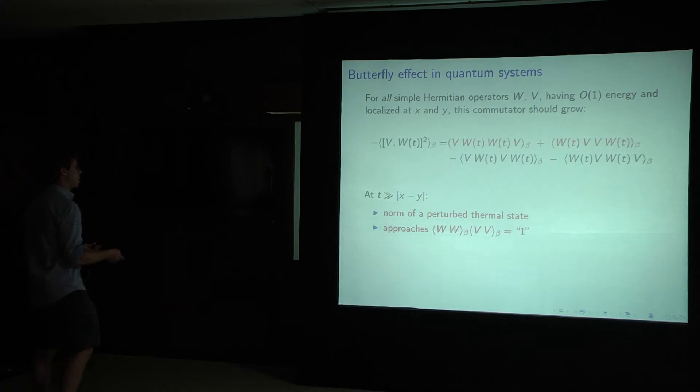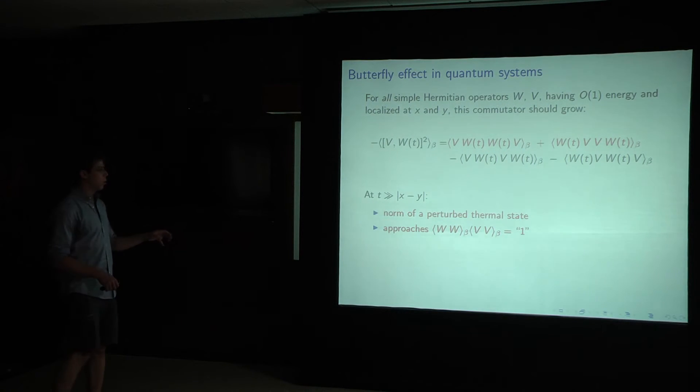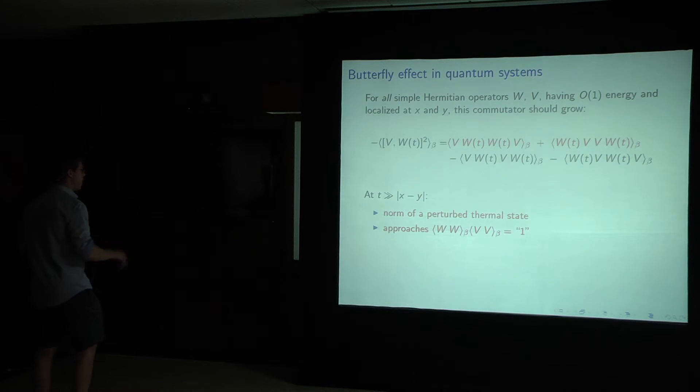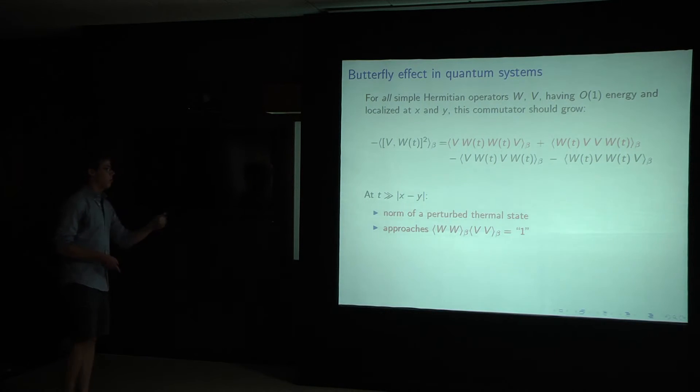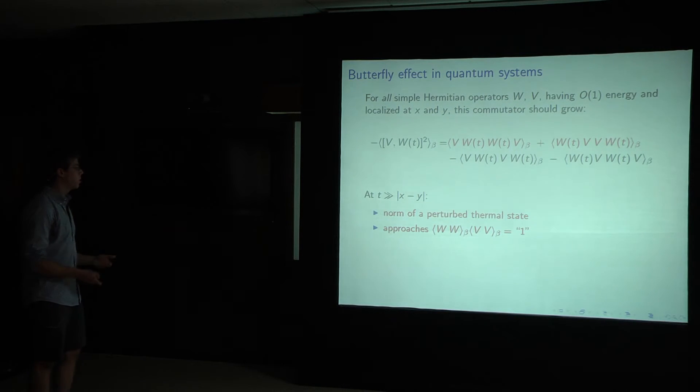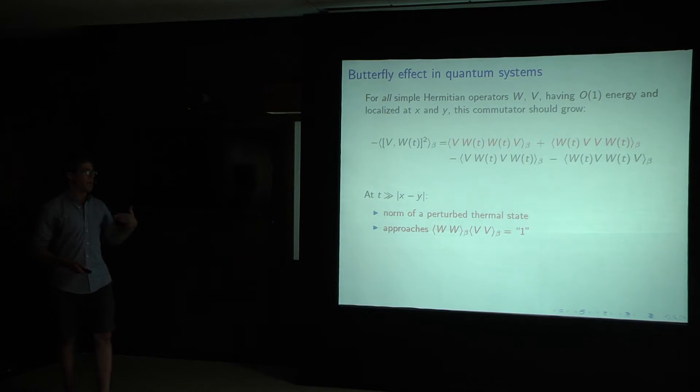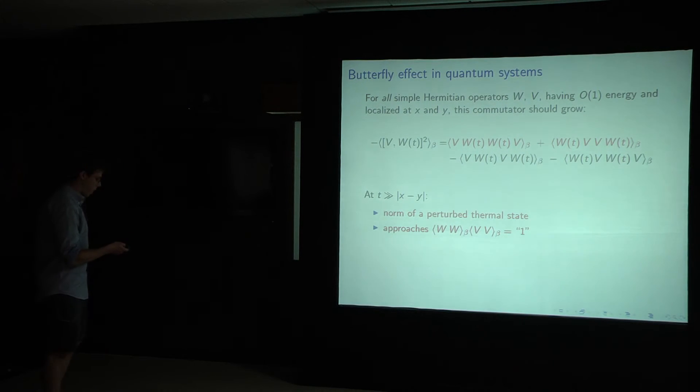And that should be, basically, the two-point function of W times the norm of the perturbation that I applied, which is the two-point function of V. So this should approach the product of the two-point functions at late time, which is what I mean by one. In fact, if I had space, I would divide by these quantities, and then it will equal one exactly.